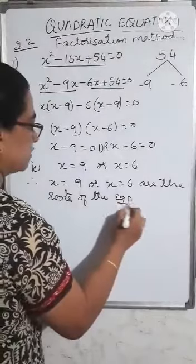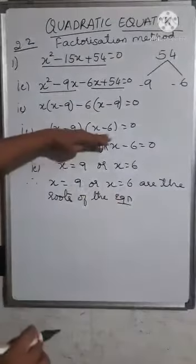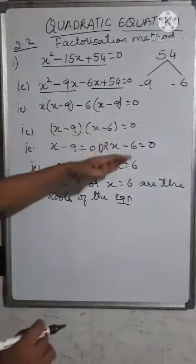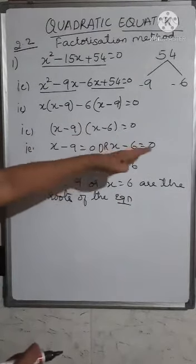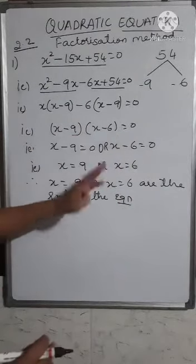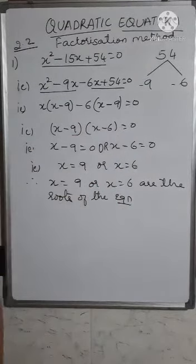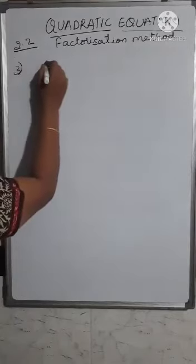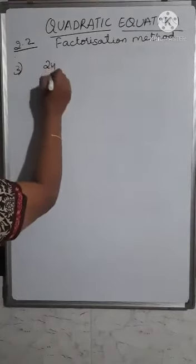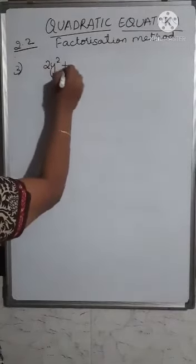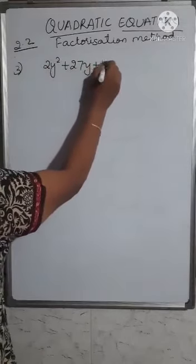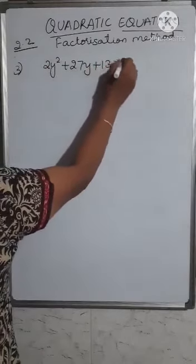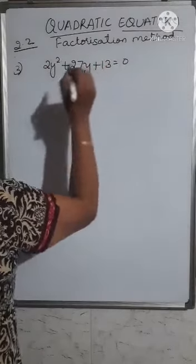So up to the factoring step you have already learnt it. The only addition here is equating to 0 and finding the values of x, which are the roots.